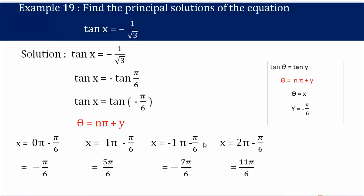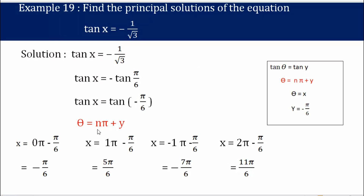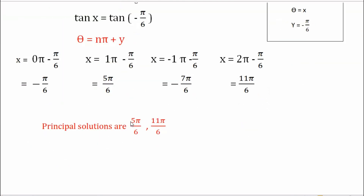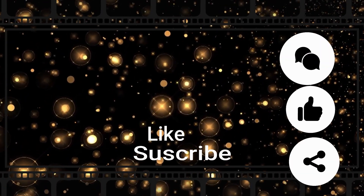For n = 2: x = 2π + (−π/6) = 11π/6. Since π/6 is 30°, 11×30 = 330°, which falls between 0° and 360° — a valid solution. Putting further values of n like 3 or 4 will result in values greater than 360°, so we stop here. Therefore, the principal solutions are x = 5π/6 and x = 11π/6. Hope you followed, students — if you have any doubt please let me know in the comments below.